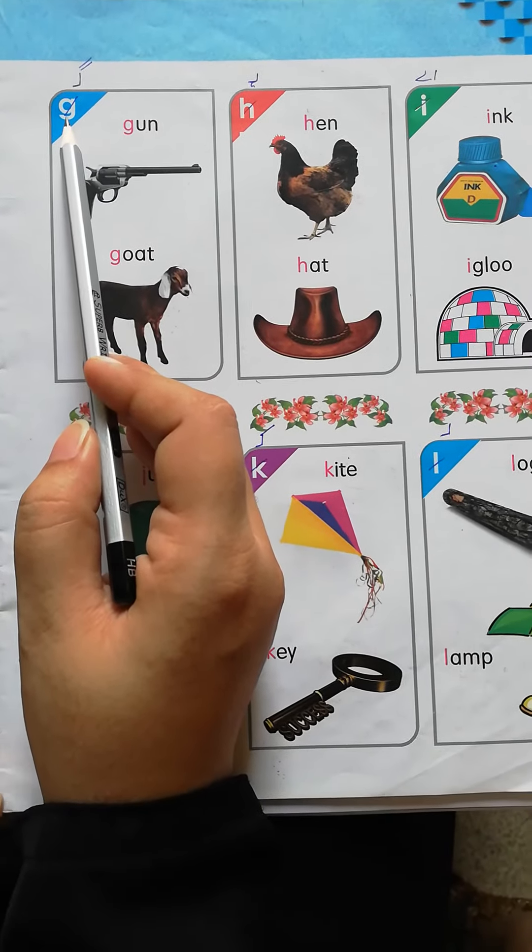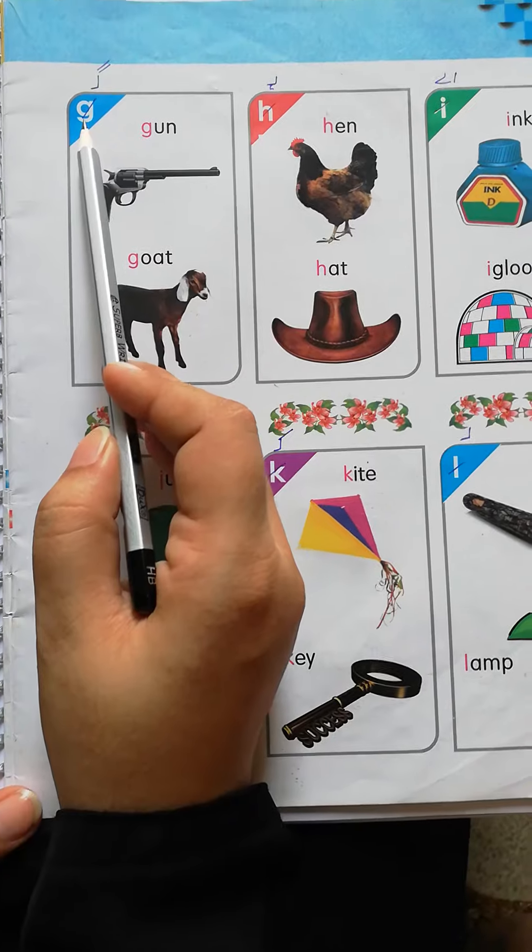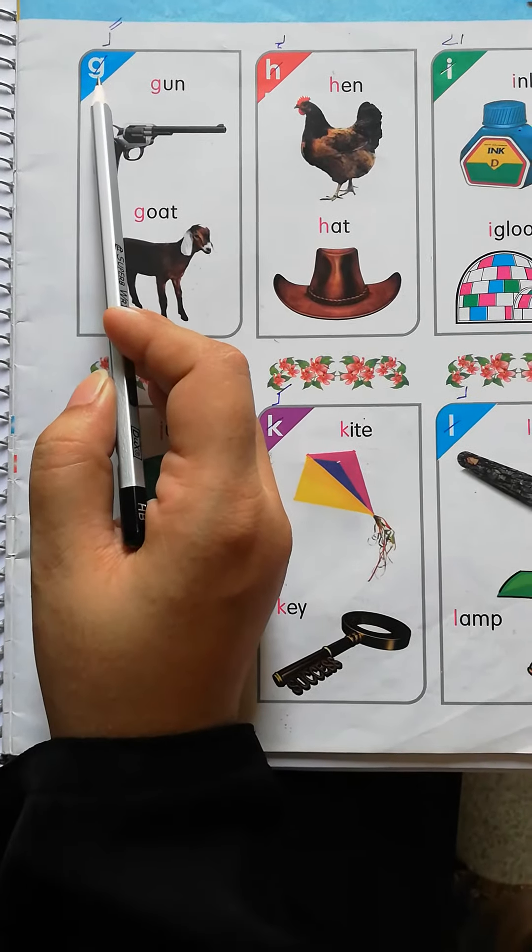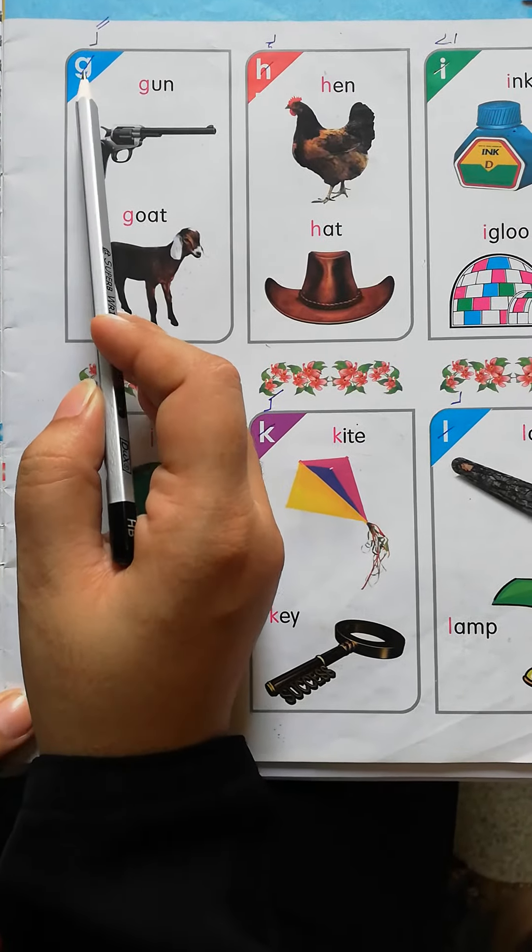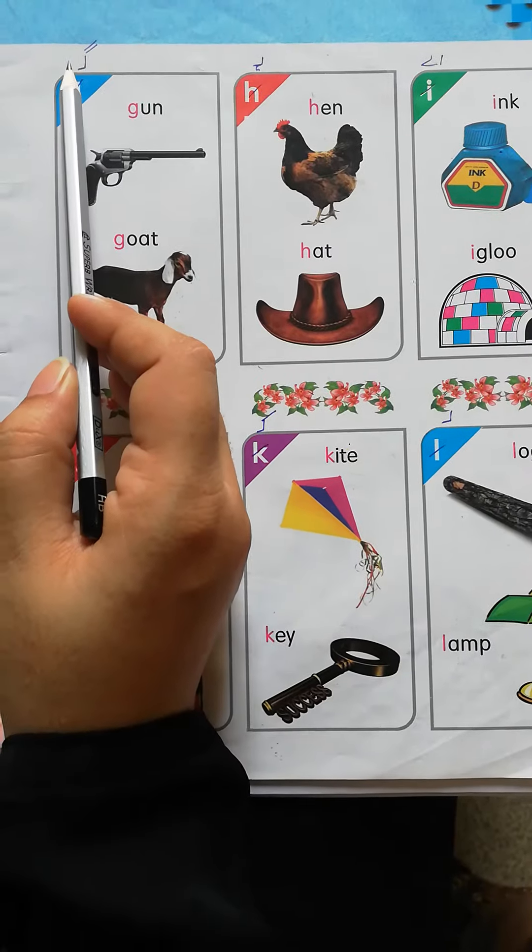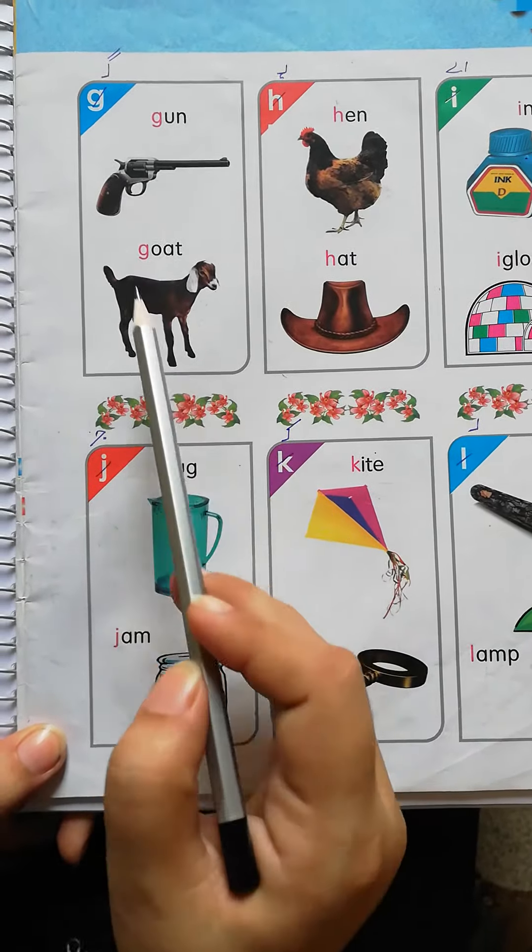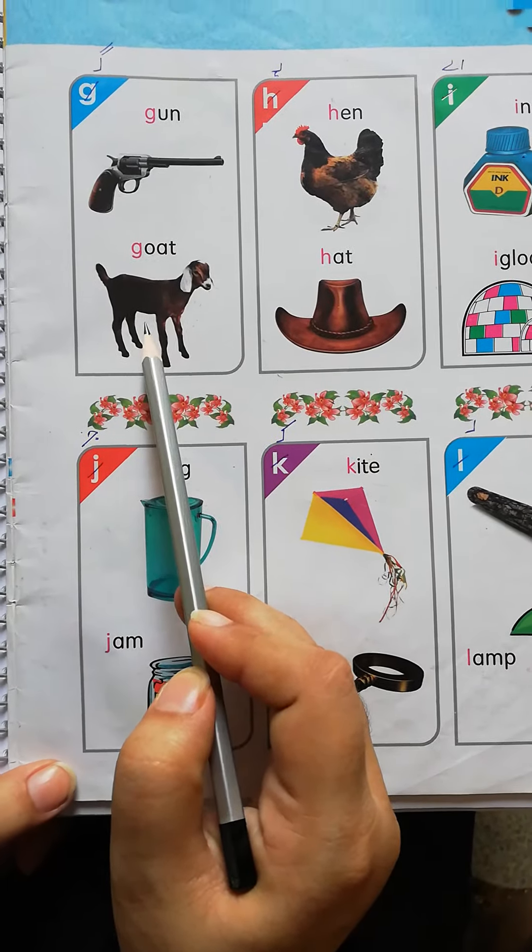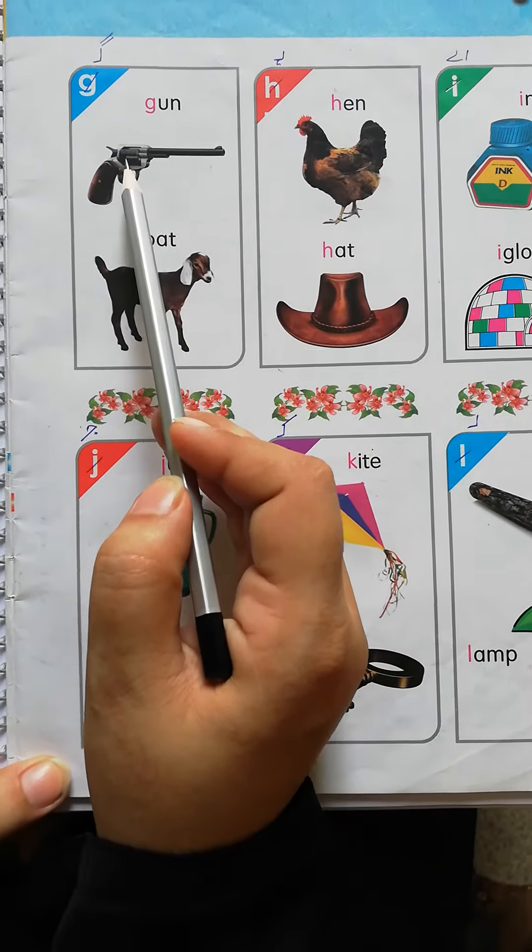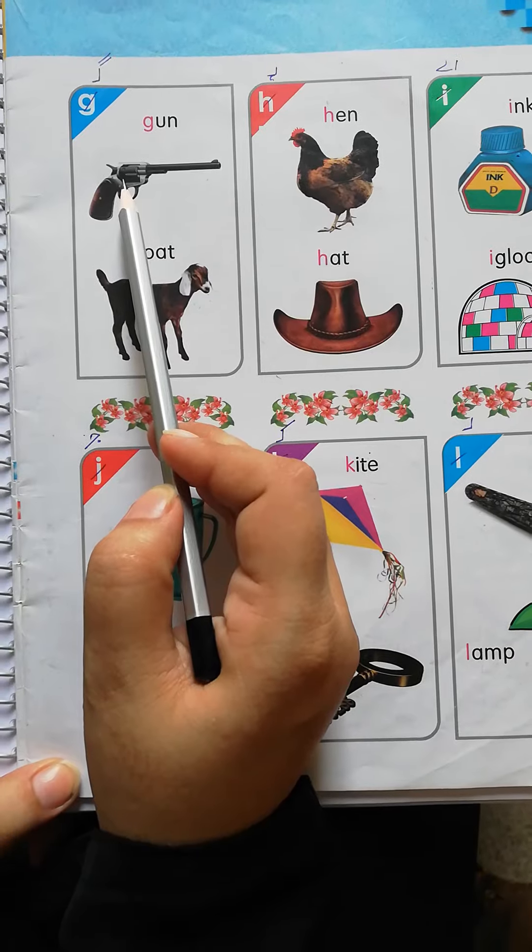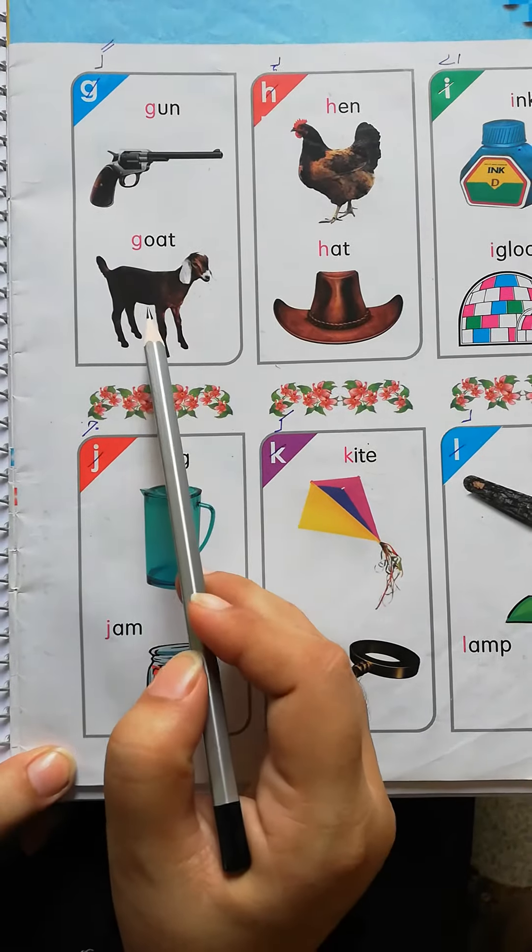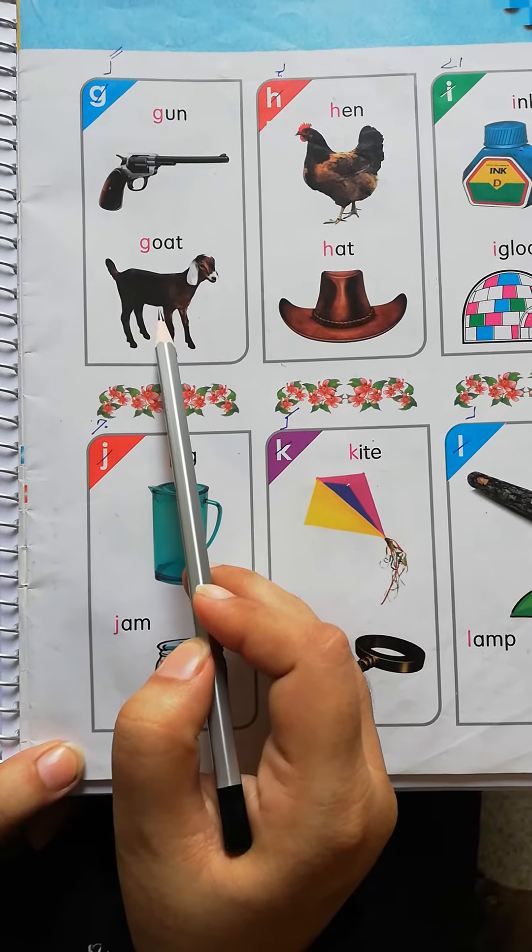Assalamu alaikum students, how are you? Hope you are all fine. Today we will learn about G and its sound. G for this gun, G for this goat. The beginning sound of gun is G. The beginning sound of goat is G.